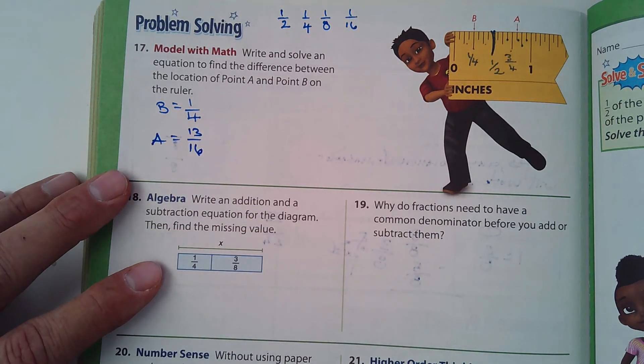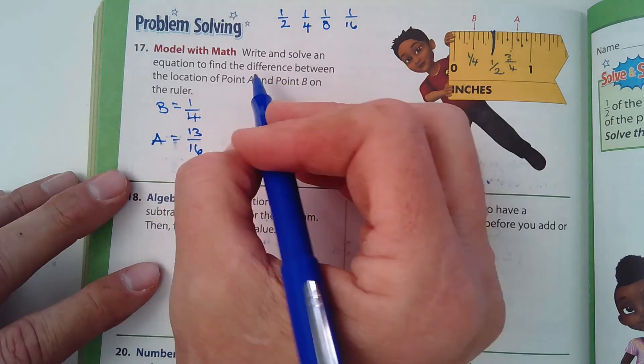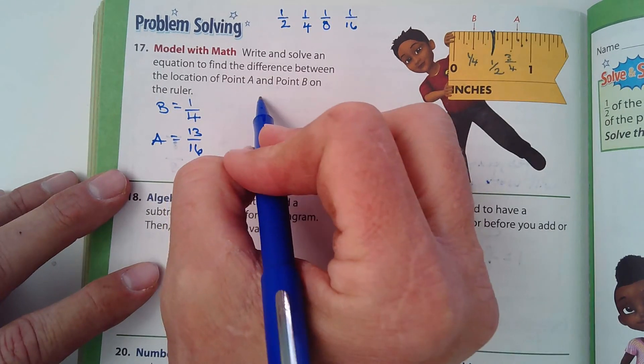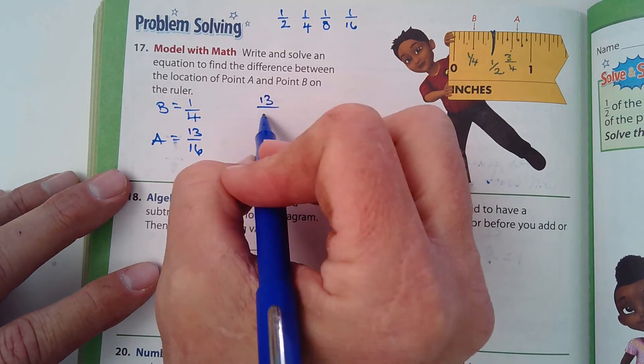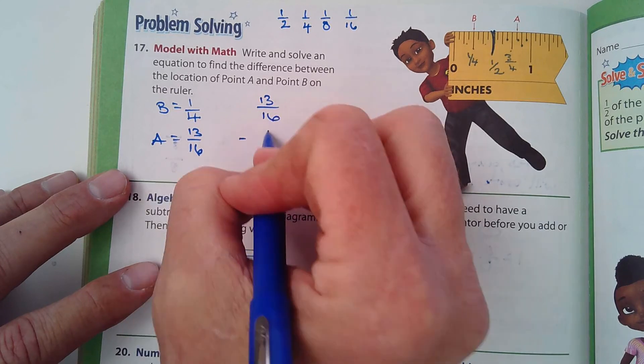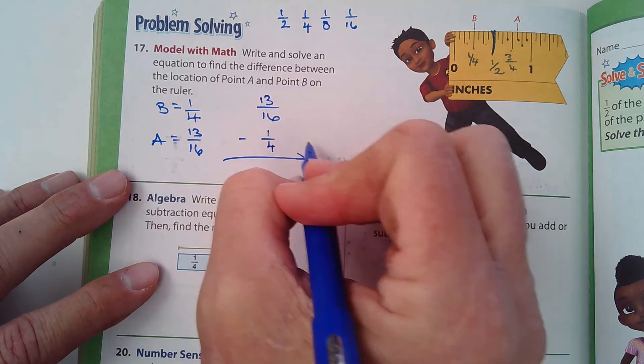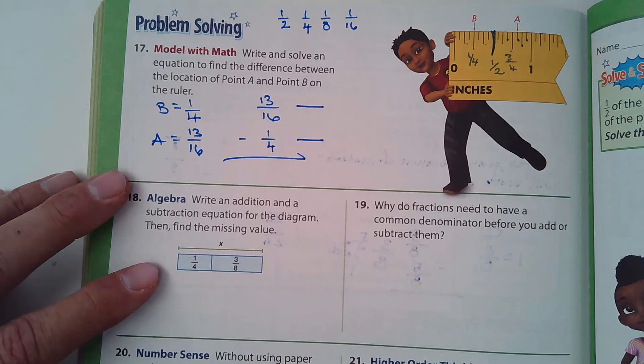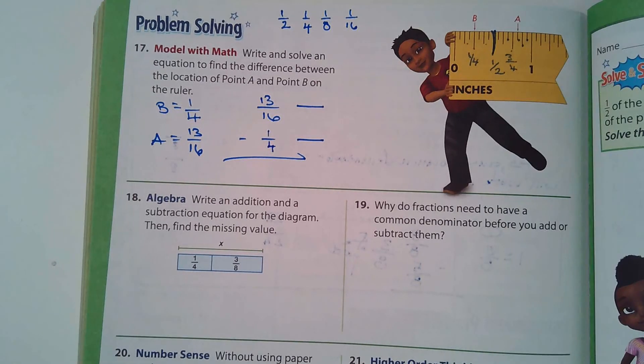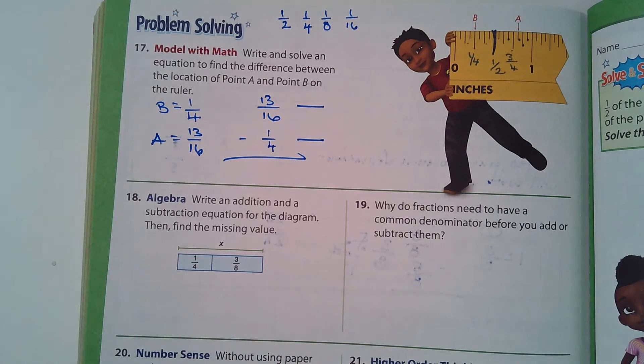And what are we subtracting? We're subtracting one quarter from 13 sixteenths. Because we've got to find the difference. 13 sixteenths. Subtracting one quarter. What's the common denominator? Well, it should be obvious. It's 16. I'll let you guys figure the rest of that one out.